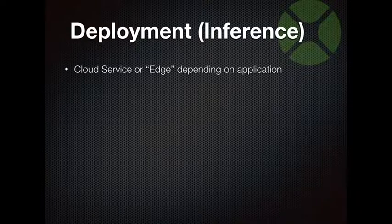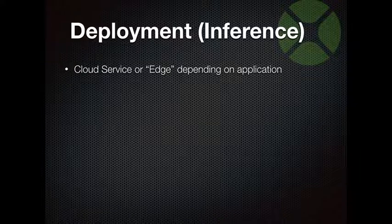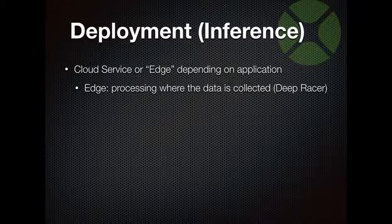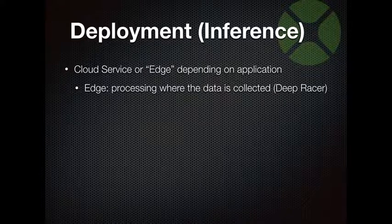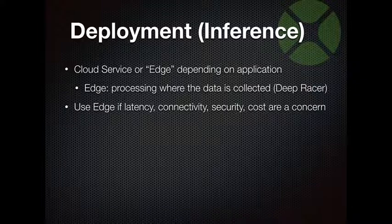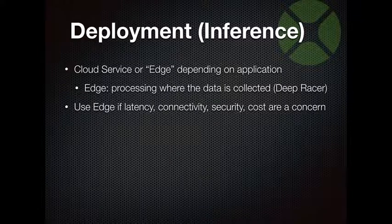For deployment — inference — you have two options: leave your model in the cloud and access it there, or download it to what's known as 'the edge,' defined as where the data was acquired. For example, DeepRacer is an edge device. You can't take an image from the camera, send it to the cloud, and get back a response two or three seconds later to tell you to turn left — you'd already be off the track. So if latency, connectivity, security, or cost are concerns, deploy your model on the edge.